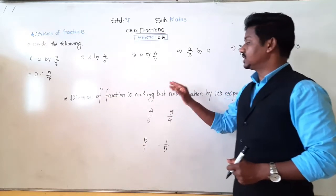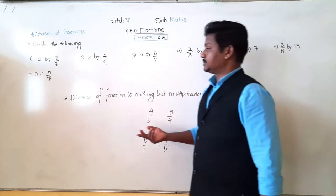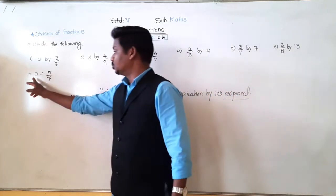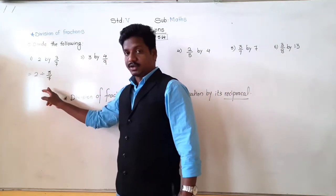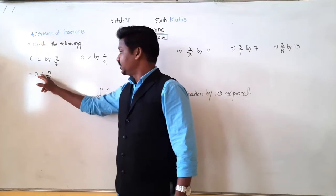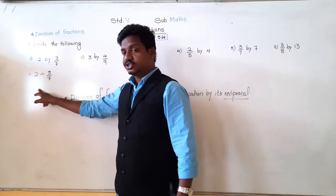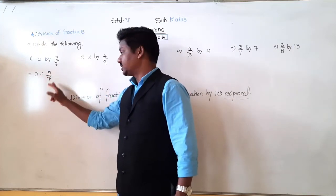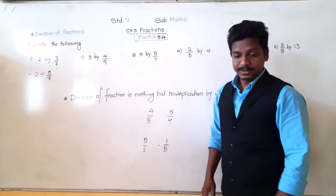So, division of a fraction is nothing but multiplication by its reciprocal. We see here 2 divided by 3 upon 7 — division will change into multiplication and the next fraction will be converted into its reciprocal.